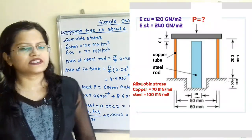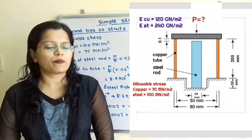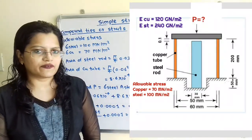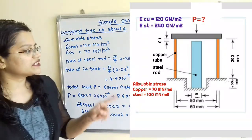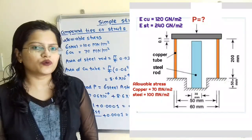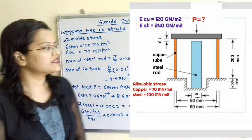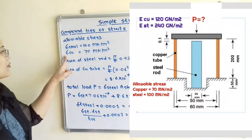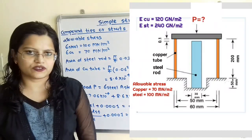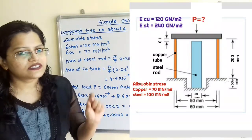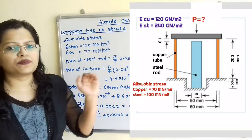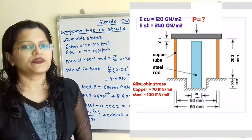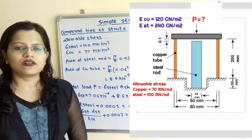Now, if we observe this diagram, the allowable stress for the copper material and steel material is given. The steel rod and copper tube are shown, and allowable stress sigma_steel is 100 MN/m² and sigma_copper is 70 MN/m². We have to find the permissible load P applied at the top of this diagram.